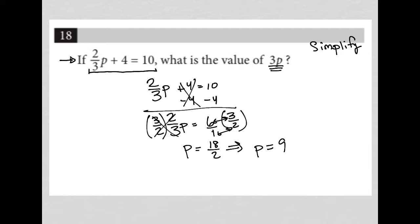So now that I know that p is equal to nine, I know that 3p is equal to three times nine, which is equal to 27. So the correct answer here is 27.